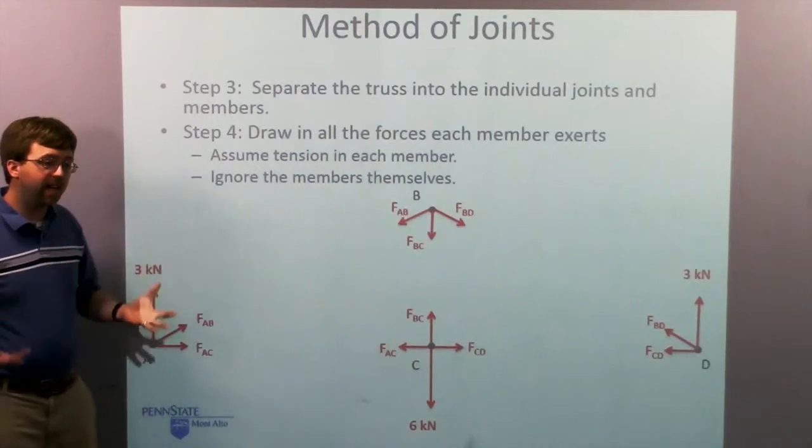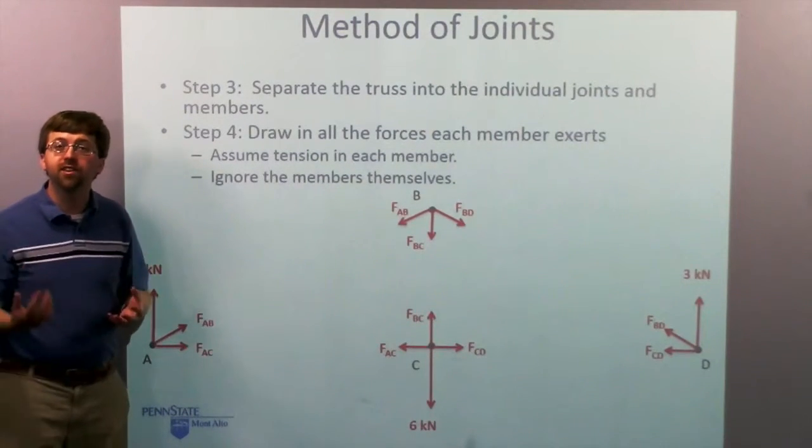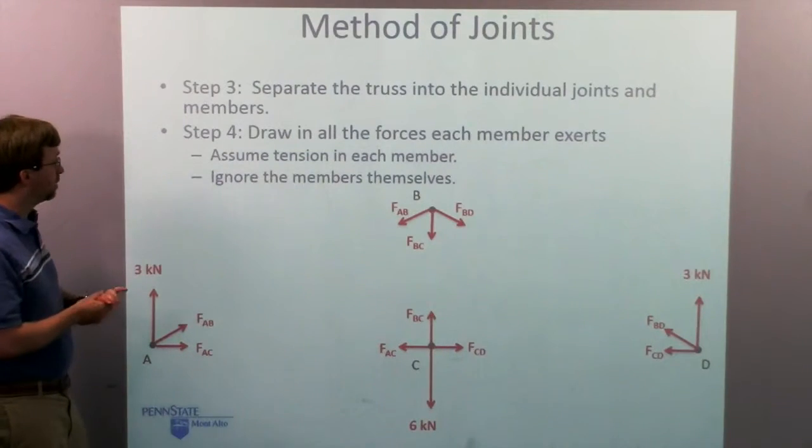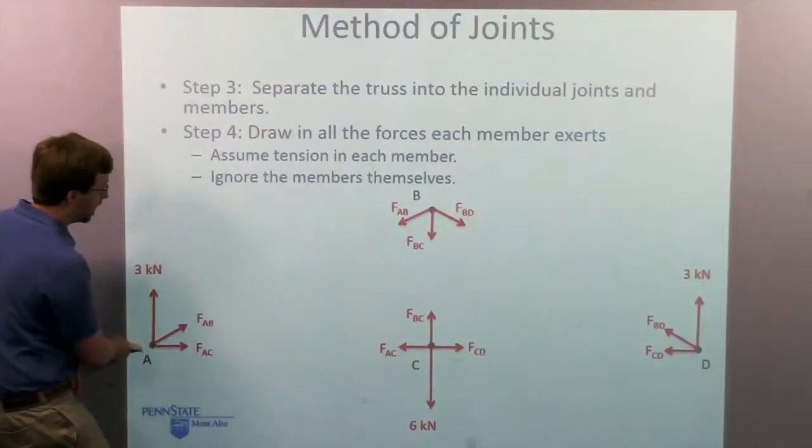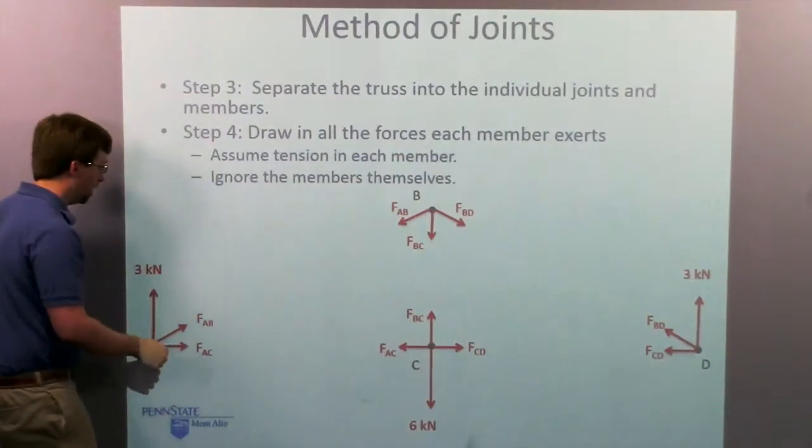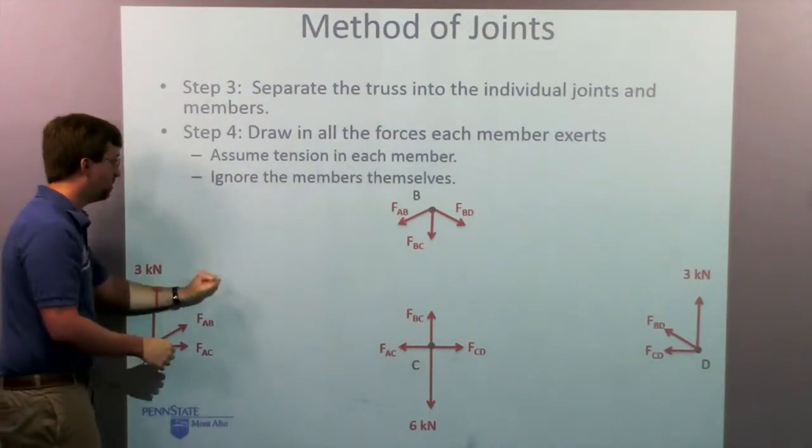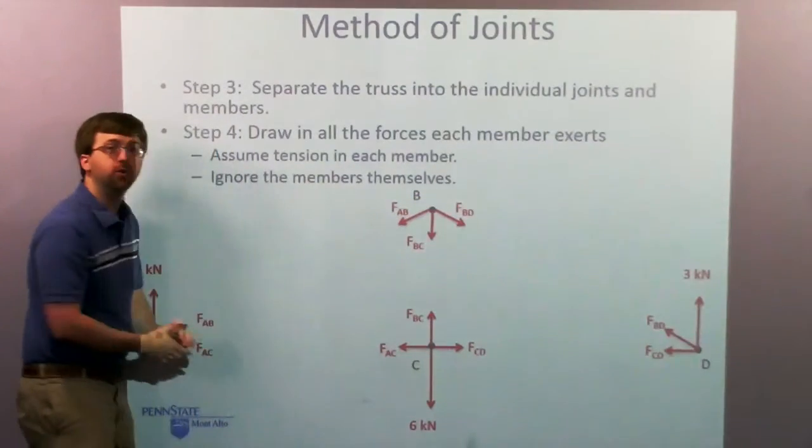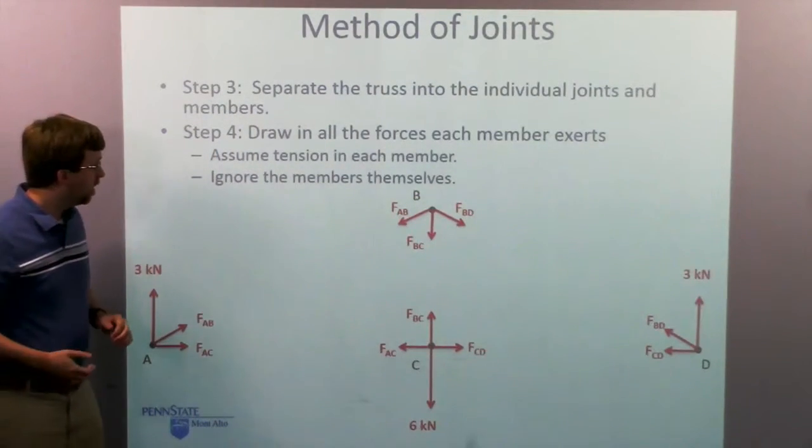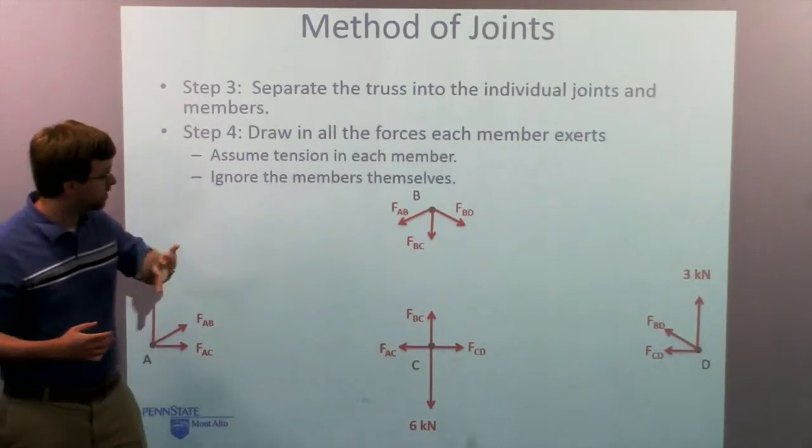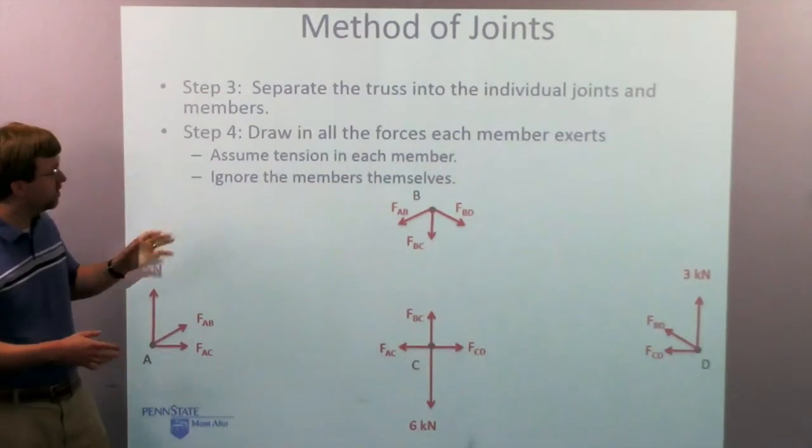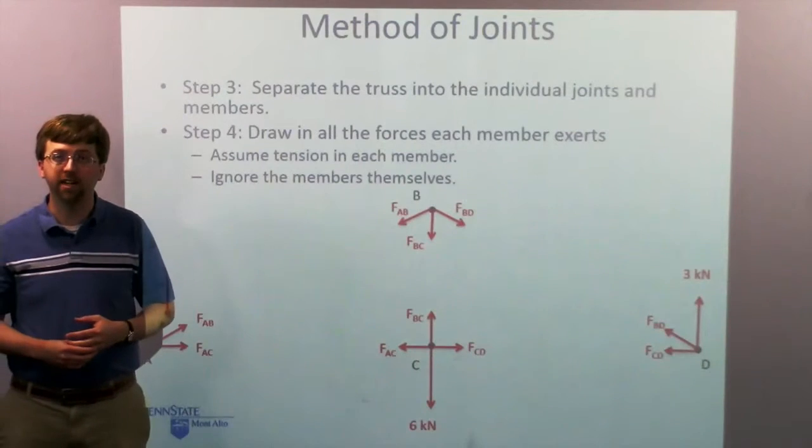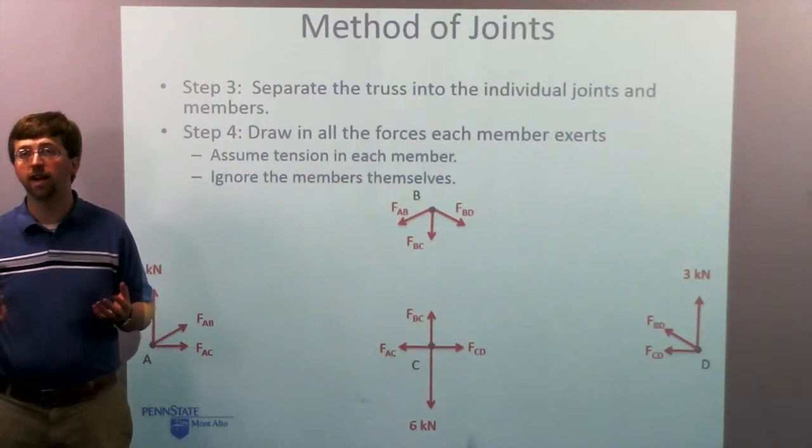So if I eliminate those members, I'm going to replace them with forces. And I'm going to assume tension in all of these. So member AB that connected point A and point B down here, I'm going to replace with a force AB and force AB. These are two equal and opposite forces there. And those are going to replace each of those members. So now I've got four separate pins. These are basically four separate free body diagrams that I'm going to use for my analysis.